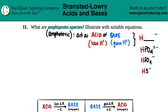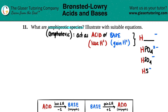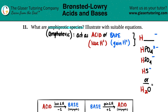Now there are some amphiprotic species that do not follow this general baseline. They're neutral compounds but they still have those hydrogens in the front — they will not have a negative charge in the back. The one that everybody knows and loves is water: H₂O. It's got the hydrogen in the front so it can act as an acid, but it has a zero charge, and because it can gain a hydrogen it could become positive — that's totally fine.